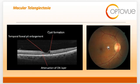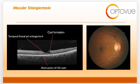Fundoscopically, you can see here that there is a right angle venule. There is this little yellow spot, which we like to say is a superficial crystalline deposit. There's some hyperpigmentation here, which is what we call an RPE pigment plaque. Other things you may notice is really an overall graying or reduced retinal transparency of the parafoveal retina, and eventually there may be development of neovascular complexes.